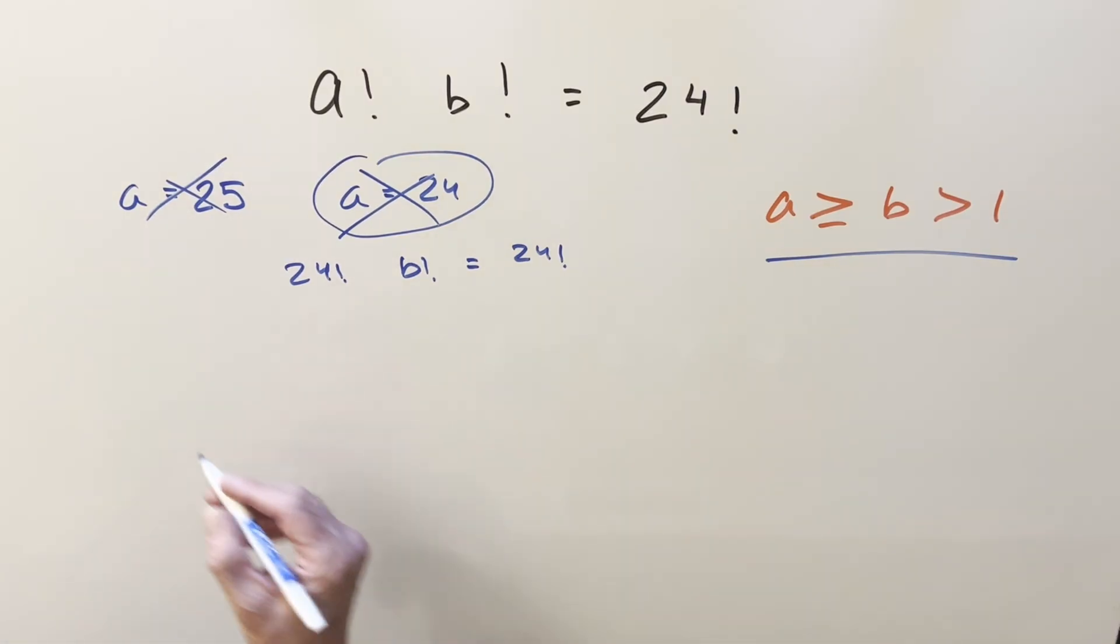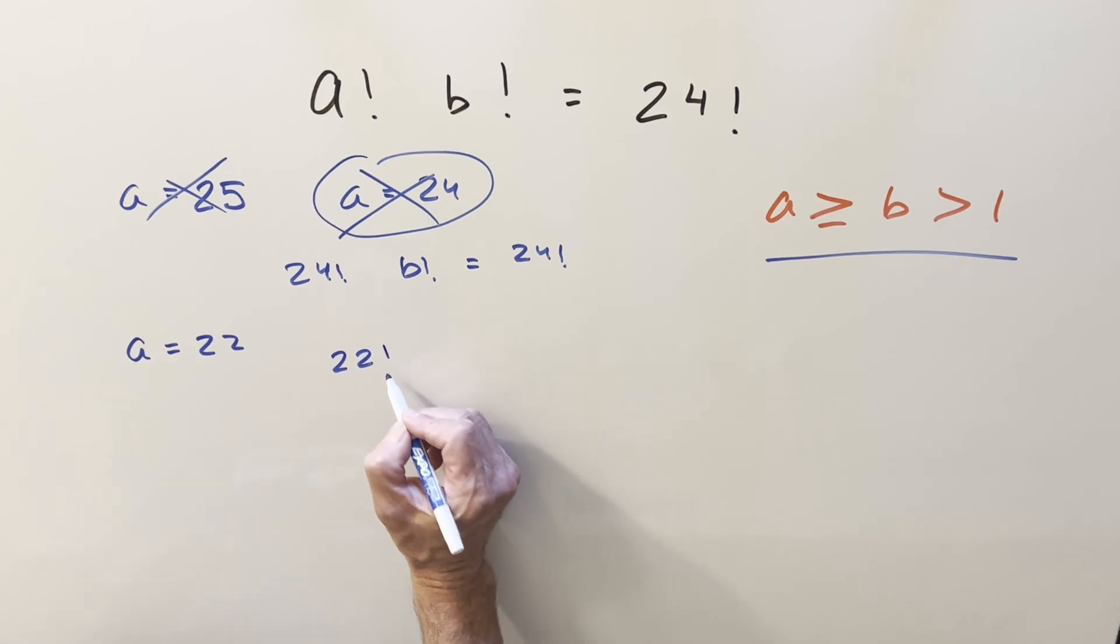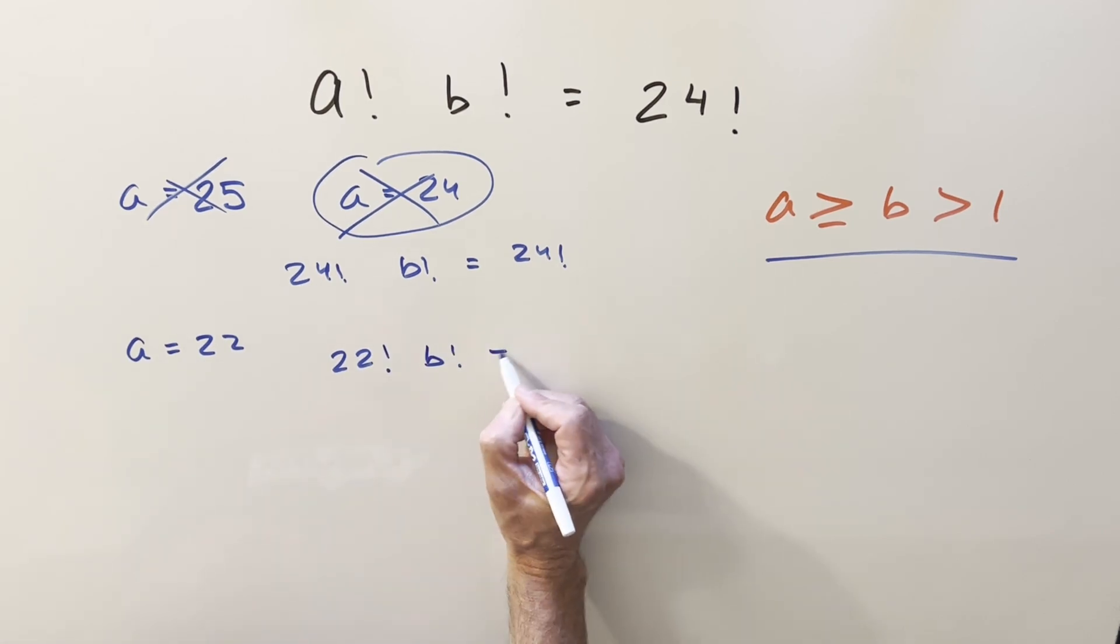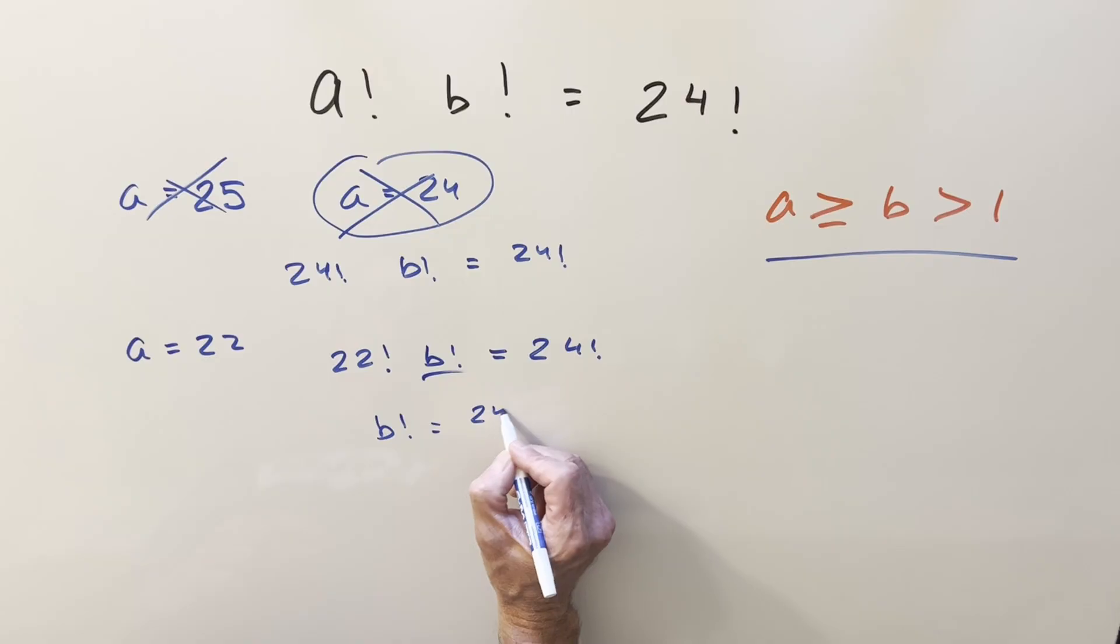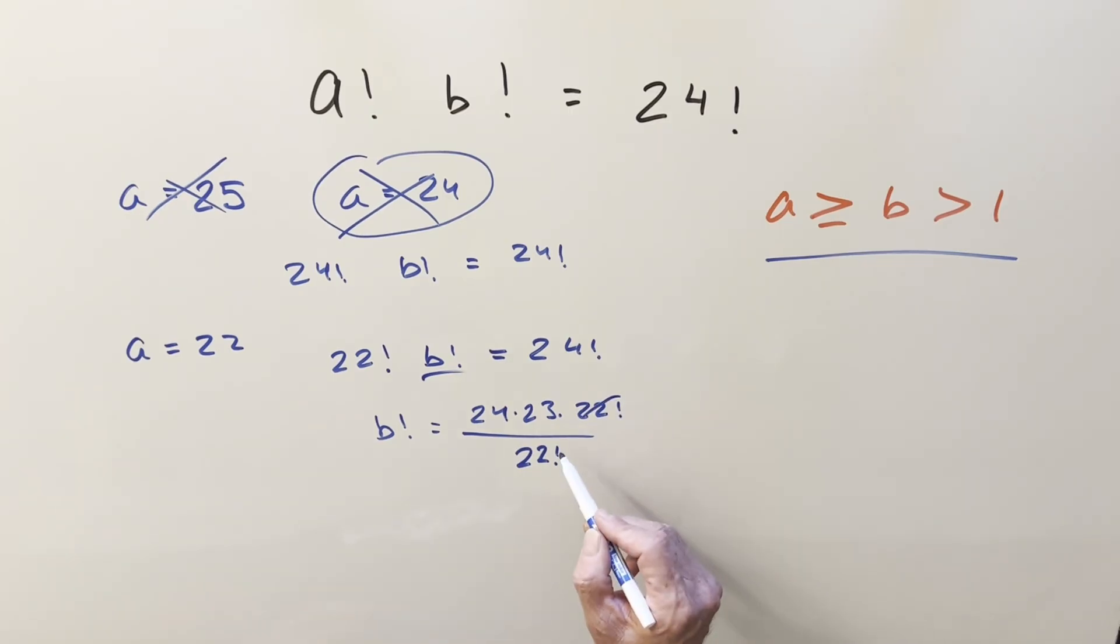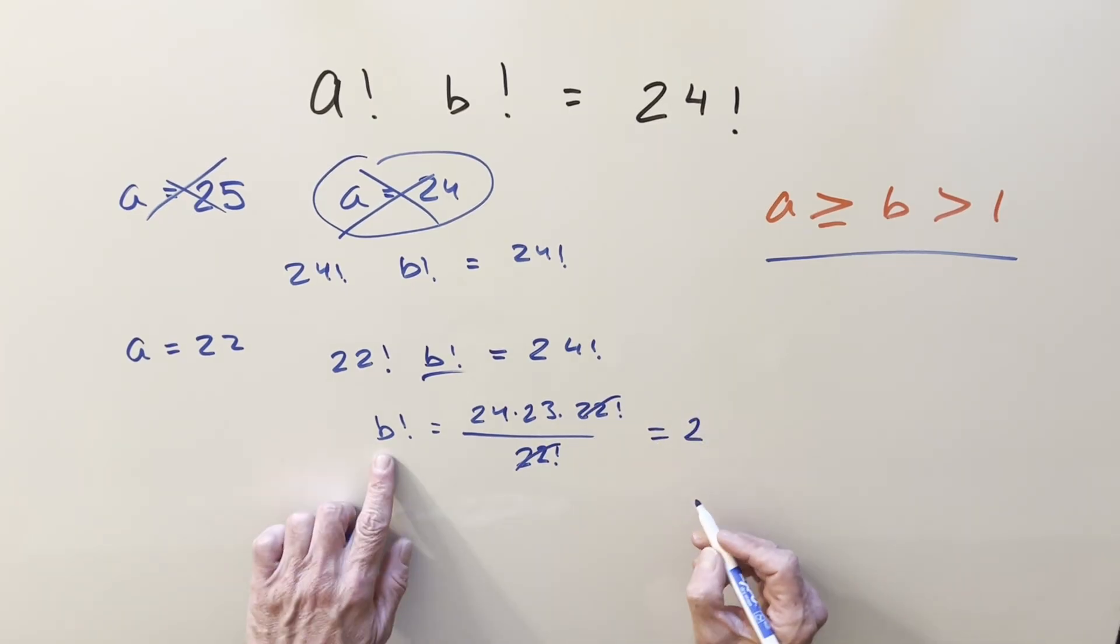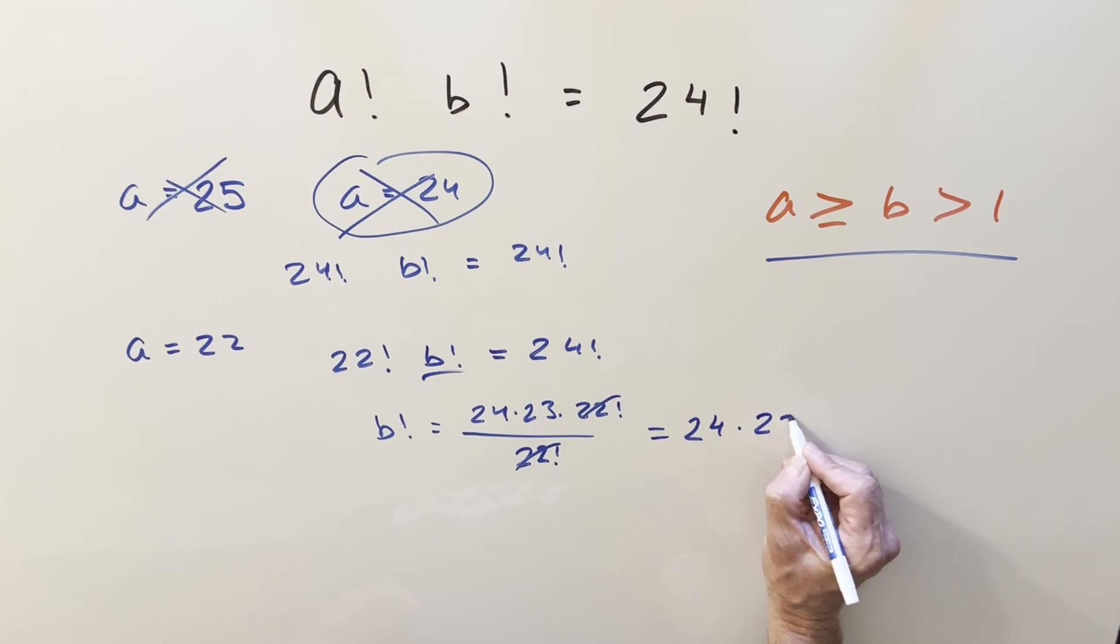Now I'll skip 23 just for demonstration purposes and we'll move on to 22 because this one we can kind of just turn it into a regular equation and solve it. So if a is 22, we have 22 factorial times b factorial equals 24 factorial. Now we just have one variable so we can solve for it dividing off 22 factorial. I'll expand this out like this here just to create cancellation when I divide off 22 factorial. Cancel here. And what we're left with is we're saying b factorial equals 24 times 23.